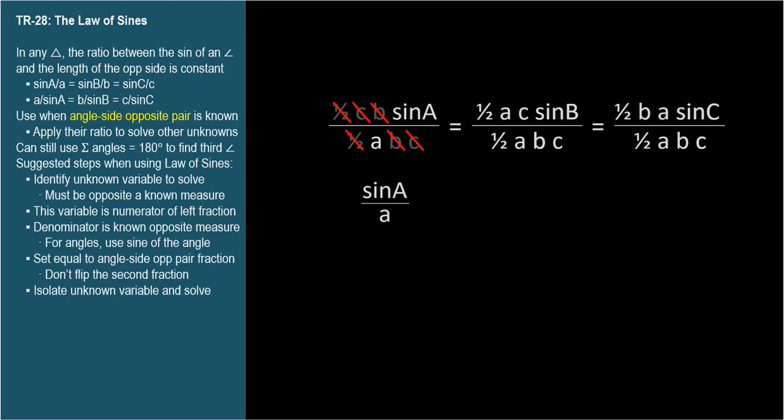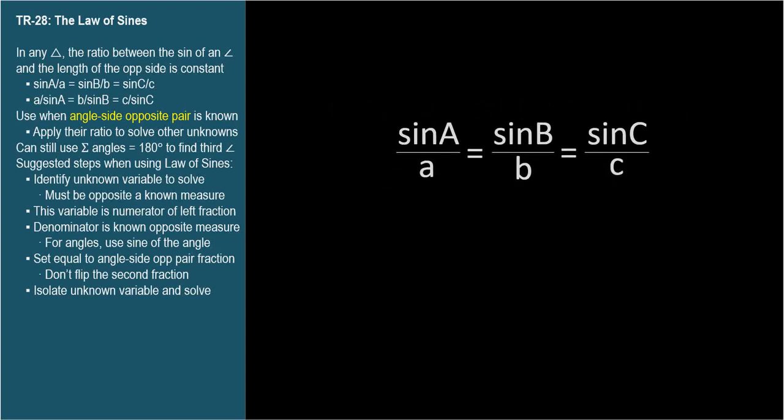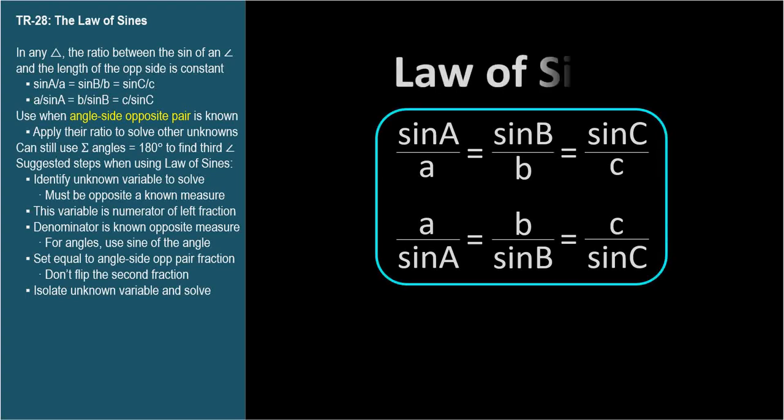In the middle expression, we get cancellations of one-half A and C. This leaves us with sine B over B. In the rightmost expression, the one-half B's and A's cancel, leaving sine C over C. These three expressions are all equal to each other in all triangles. We can also take the reciprocal of all three. They'll be identical to each other also.